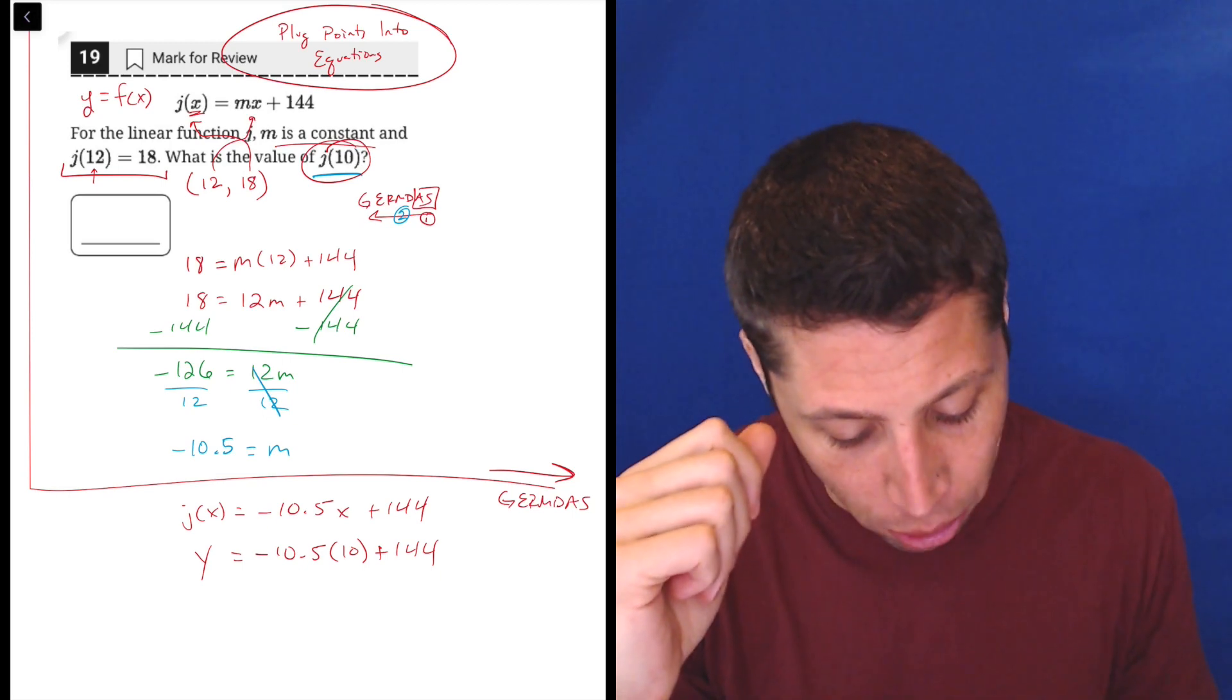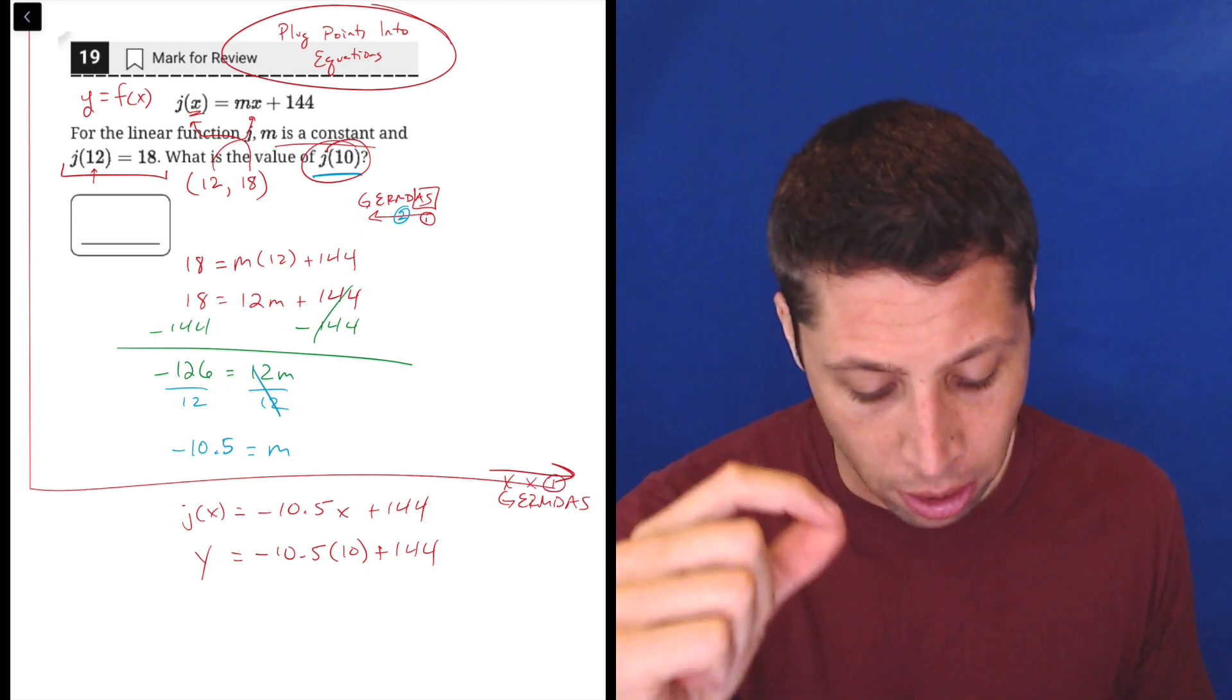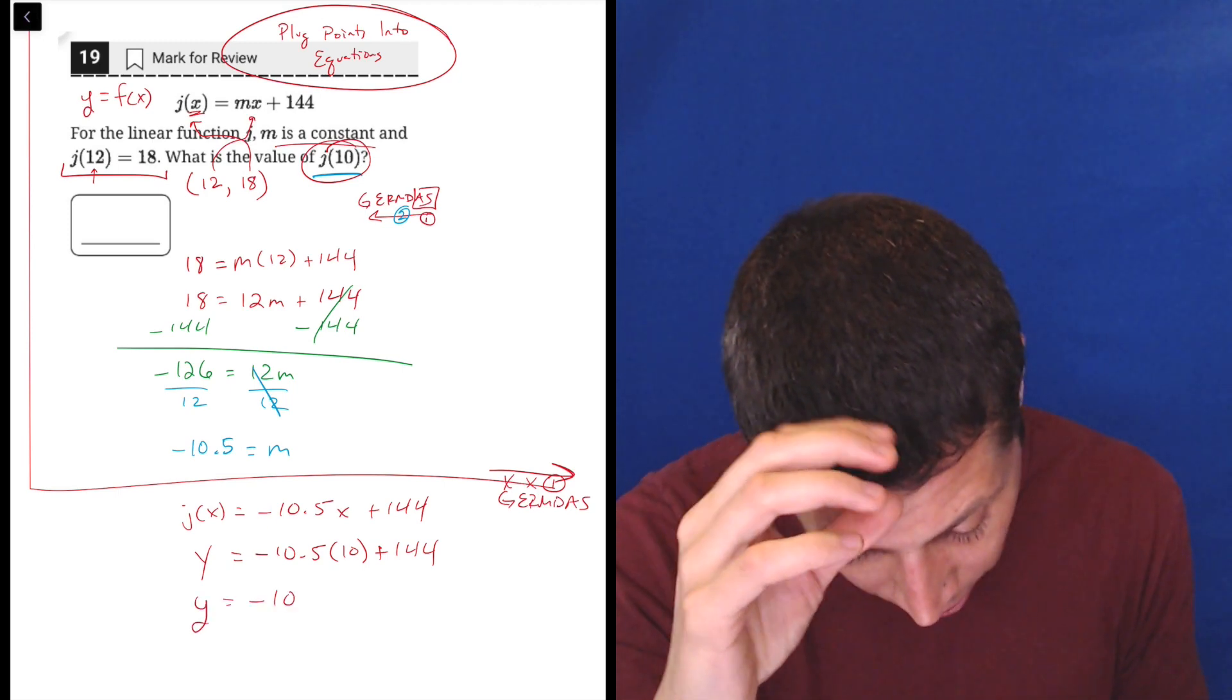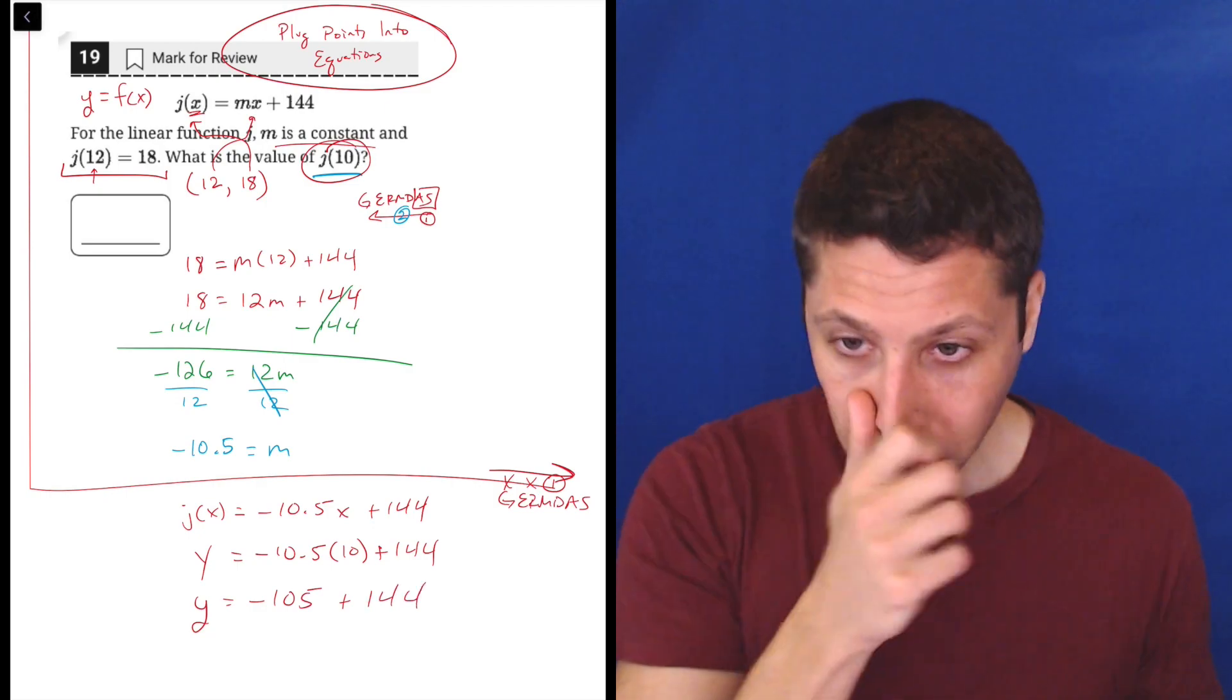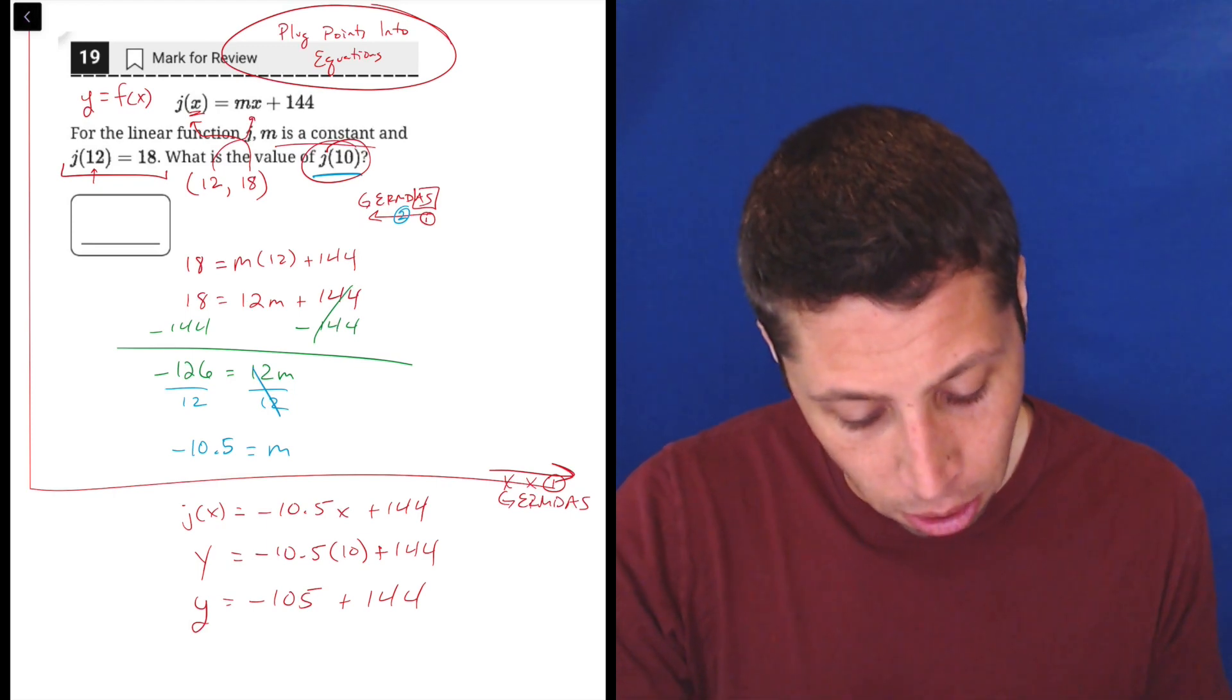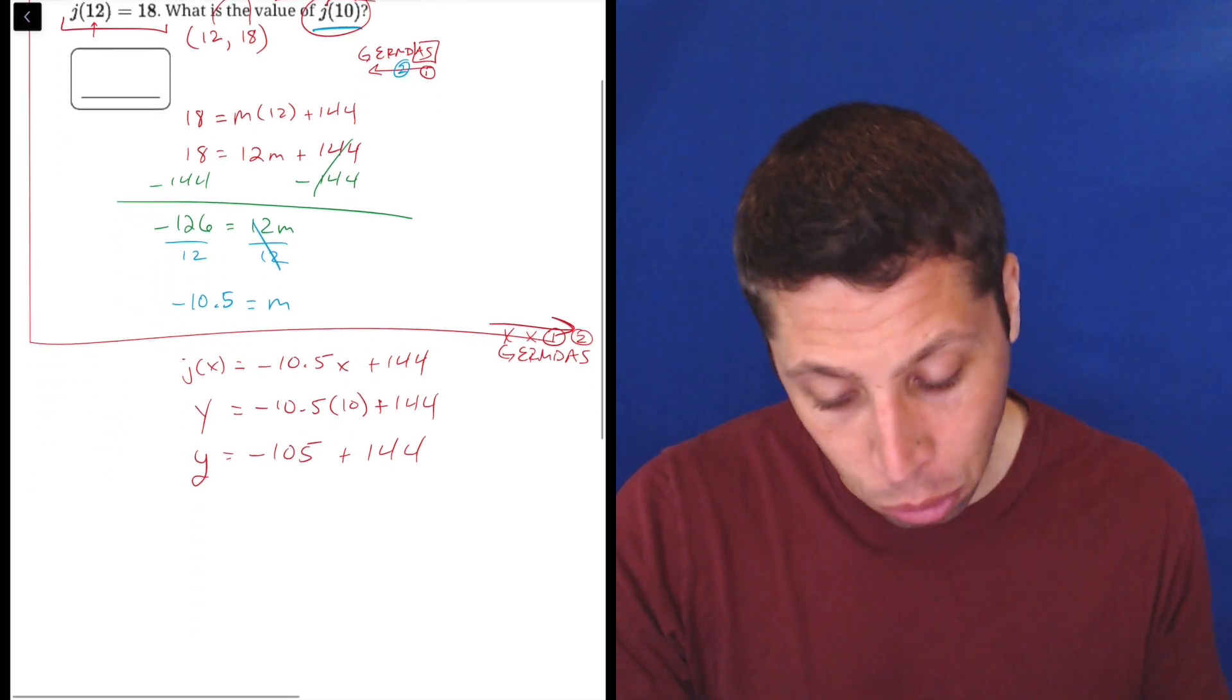So this time we go through forward. There's no groupings. There's no exponents or radicals, but there is multiplication or division, right? Negative 10.5 times 10. We've got to do that first. So that is y is equal to negative 105 plus 144. So we do this in our calculator, but multiplying things by 10 is not so bad. Negative 105 plus 144, that's all the addition, that's all the multiplication and division. So now we can go to addition and subtraction.